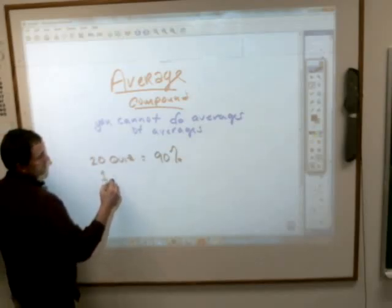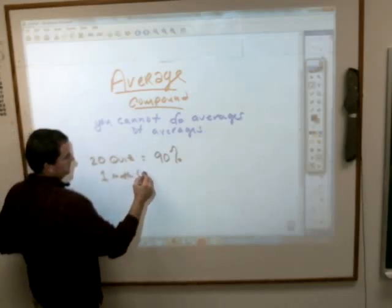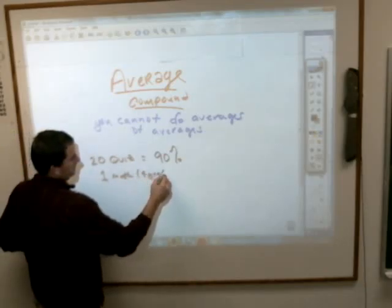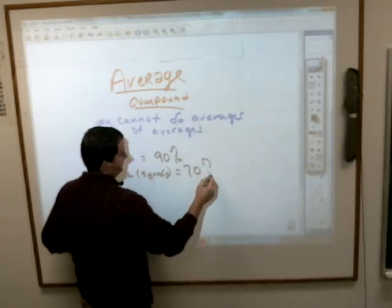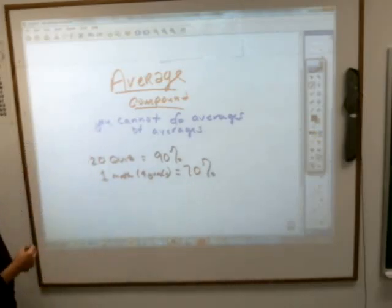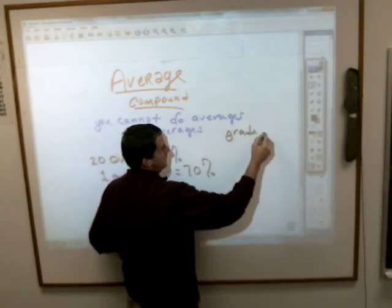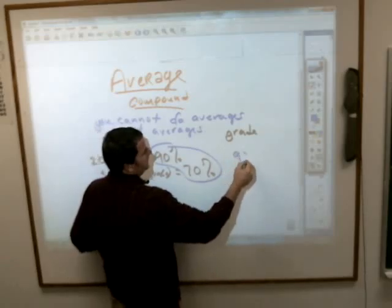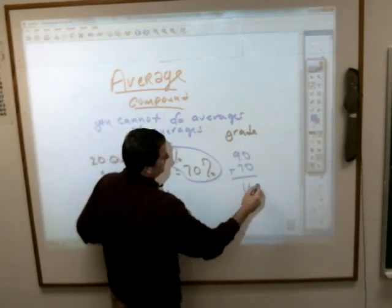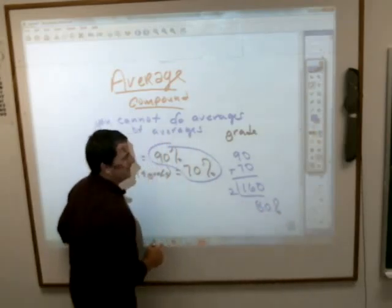You took a math test, which is actually worth four grades. And on that, you averaged a 70% — which may be close to reality. If I asked you what your average grade is, you cannot just take these two numbers and say 90 plus 70 is 160, divide it by two, because there's two grades, and say my grade is now an 80%.